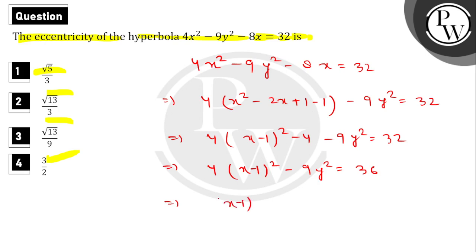Dividing this equation by 36, we finally get (x-1)²/9 - y²/4 = 1.